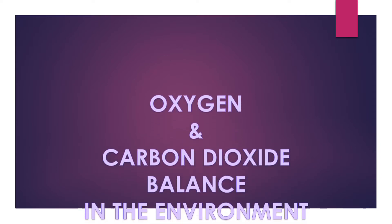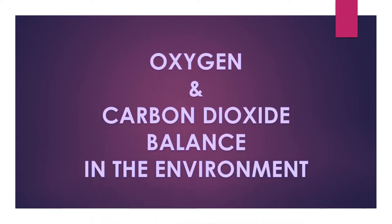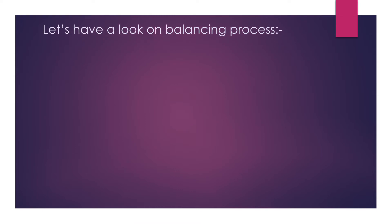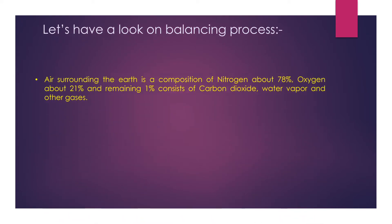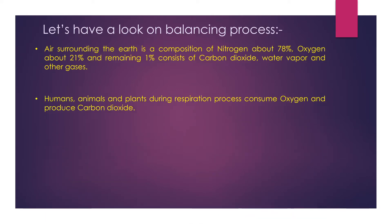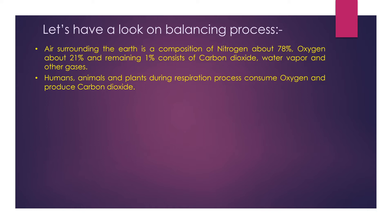Let's have a look at the balancing process of oxygen and carbon dioxide in the environment. Air surrounding the earth is a composition of nitrogen — about 78 percent — oxygen about 21 percent, and the remaining one percent consists of carbon dioxide, water vapor, and other gases.